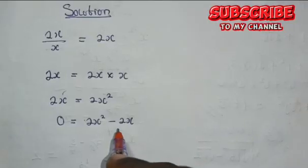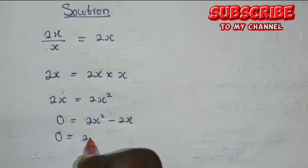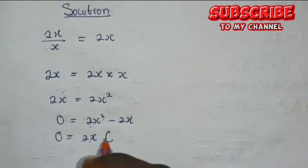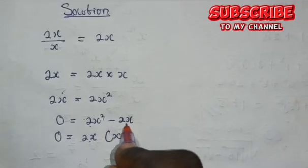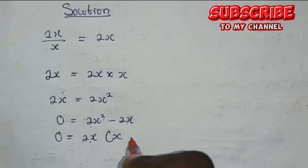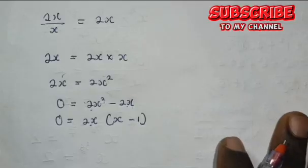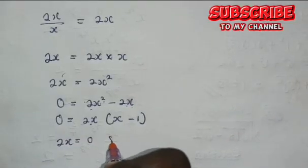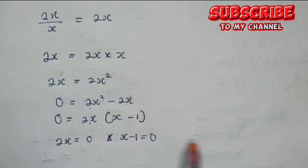When you look at this, you can factor out 2x. So, we have 0 equals 2x times (x minus 1). This implies that 2x equals 0 and x minus 1 equals 0.